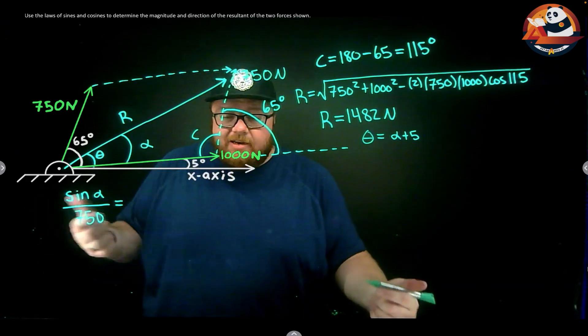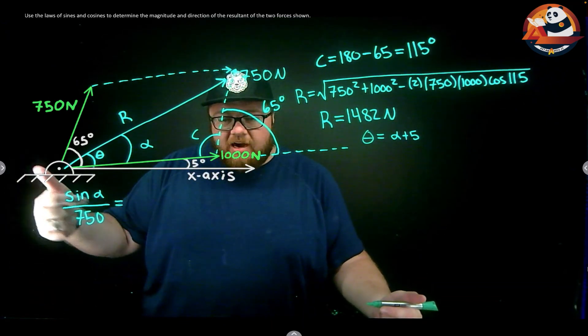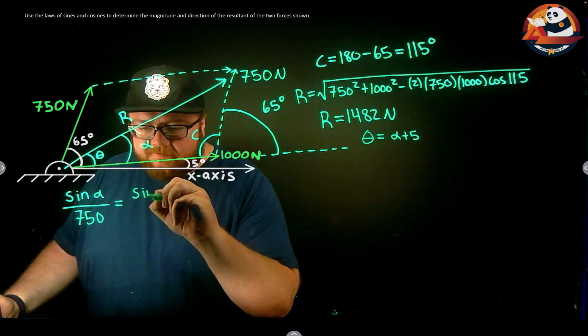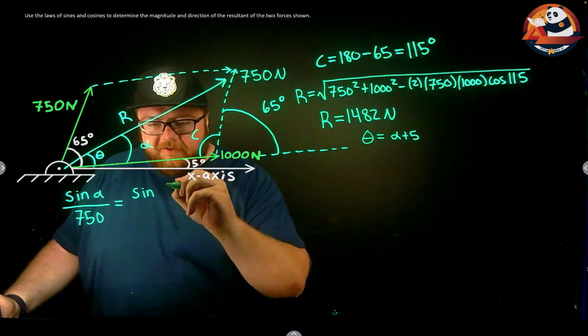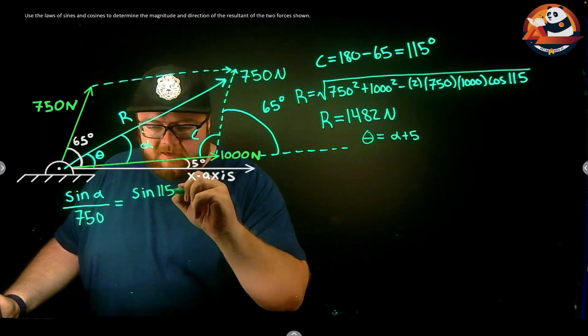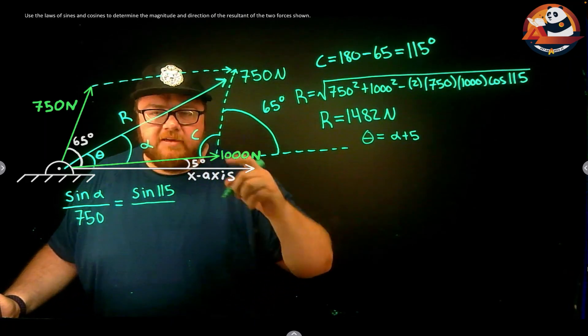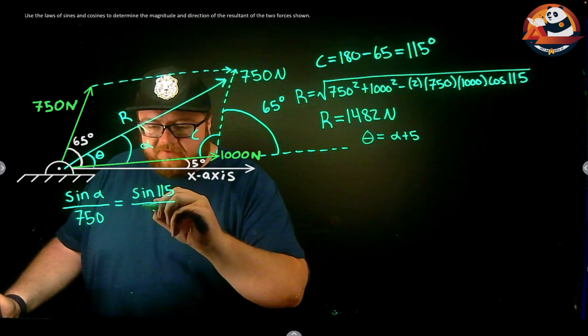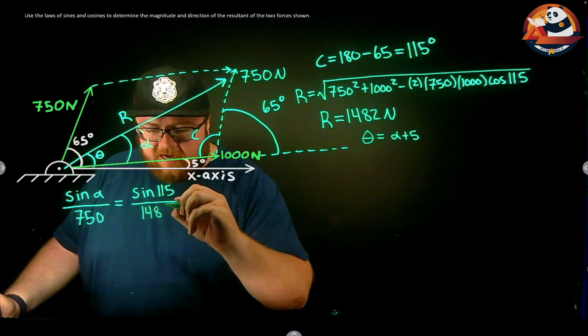So I could put in those two. I'm going to get an equation with only alpha as an unknown. So equals the sine of angle C, sine of 115, divided by the resultant R, which we just found using our law of cosines, 1482.